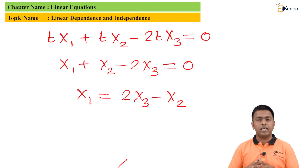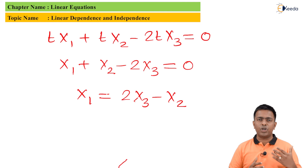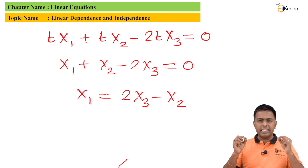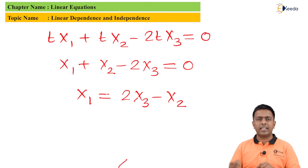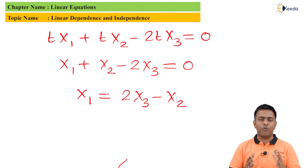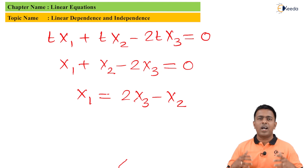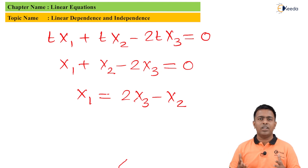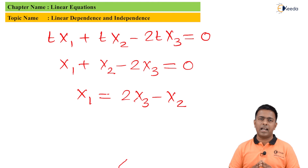So guys, here we got all values of k1, k2, k3 as non-zero, which is why the given vectors are linearly dependent. As asked, the relationship allows us to represent one vector in terms of the other two. I'm sure you understood the solution, and in the next video I'll cover more numericals on linear dependence and independence. Thank you very much.